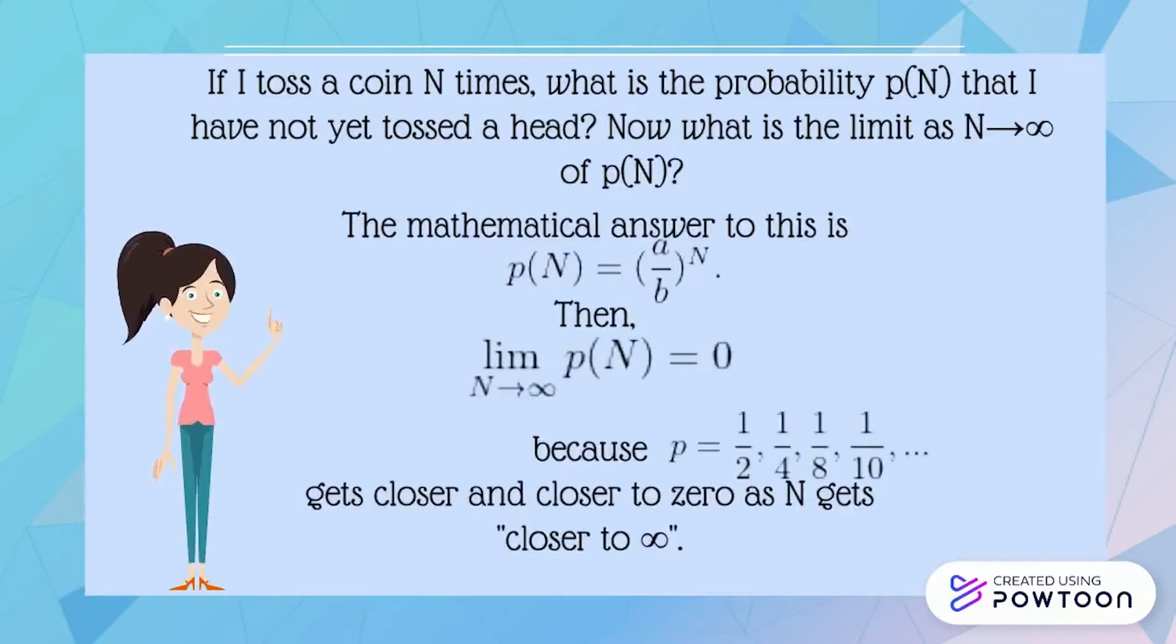Because p equals a half, a quarter, one per eight, one per tenth, and so on, gets closer and closer to zero as N gets closer to infinity.